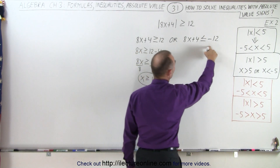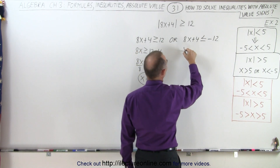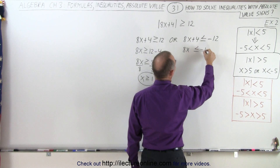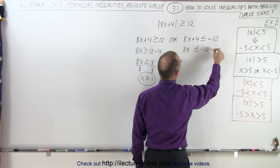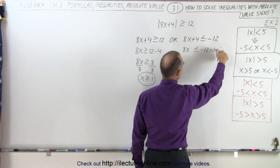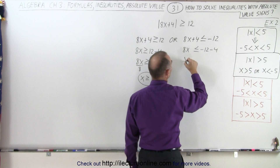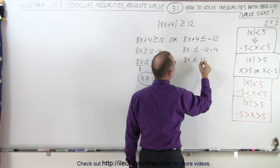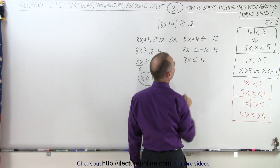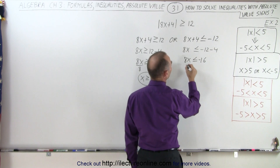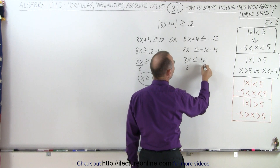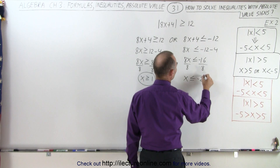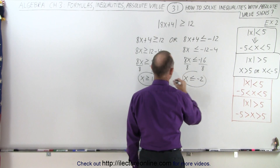Or, we solve this equation on the right. We have 8x less than or equal to negative 12 minus 4. When we bring the plus 4 across, it becomes minus 4, giving us 8x less than or equal to negative 16. Divide both sides by positive 8, and we get x is less than or equal to negative 2.